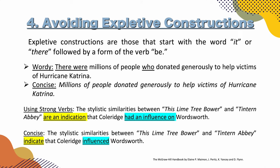So we also have examples of using strong verbs. 'The stylistic similarities between This Lime Tree Bower and Tintern Abbey are an indication that Coleridge had an influence on Wordsworth.' Making it concise: 'The stylistic similarities between This Lime Tree Bower and Tintern Abbey indicate that Coleridge influenced Wordsworth.' You can see we use the verb 'indicate' and the verb 'influence' — why not use them instead of using nouns? If it has a verb form, use the verb.